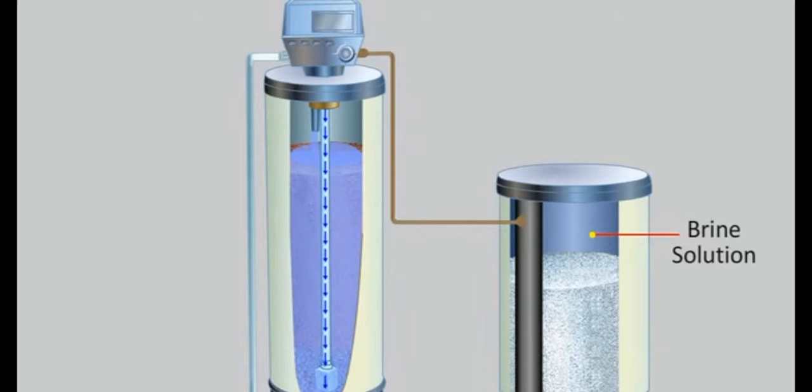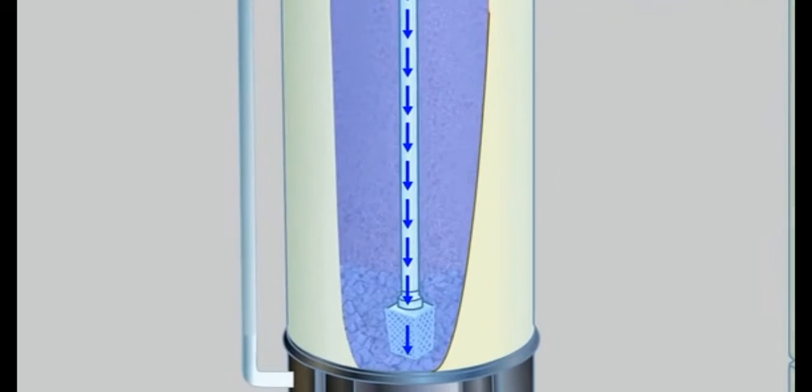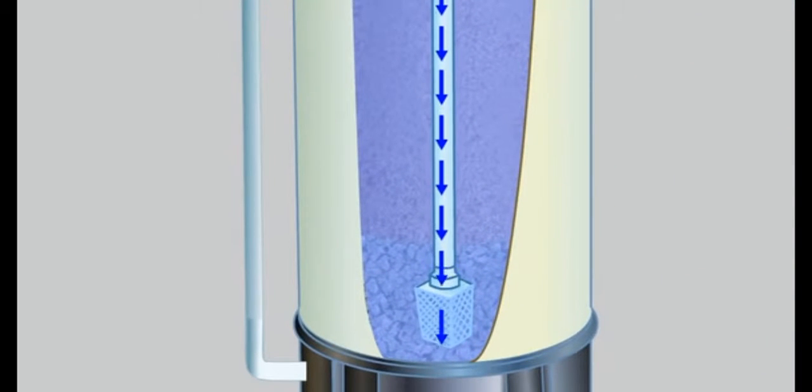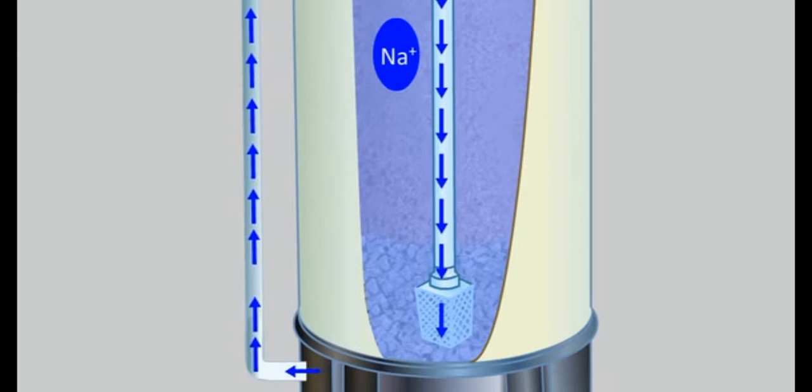Hard water is introduced into the tank from the top. Water reaches the bottom of the tank and then slowly rises through the permutit layer. In the tank, the cations present in hard water are exchanged for sodium ions. The calcium and magnesium ions remain attached to the zeolite and the water becomes soft.